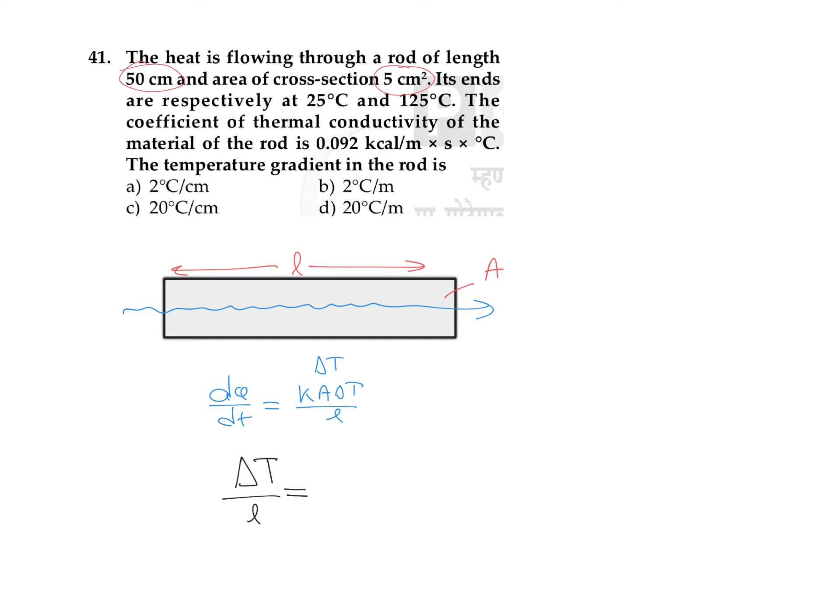You can observe in the question that the value of difference in temperature and length is given, so no need for any other values. Delta T is 125 minus 25, the difference in temperature, divided by the length of rod which is 50 centimeters.